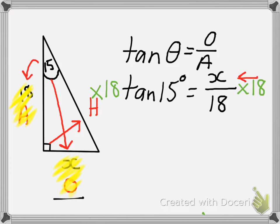Now, let's write this out a little bit more neatly. So we have 18 times tan 15 degrees equals x, because these 18s cross themselves out on that side of the equation.